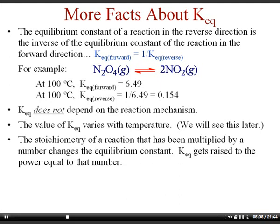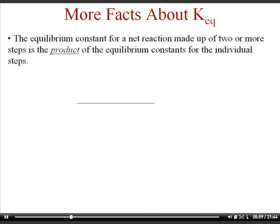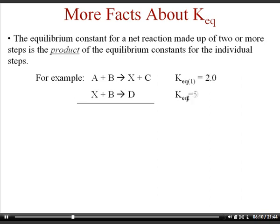The stoichiometry of a reaction that has been multiplied by a number changes the equilibrium constant. If you double the chemical equation from a 1-to-2 ratio to a 2-to-4 ratio, you get a new equilibrium constant by squaring your old equilibrium constant. Whatever you multiply a reaction by, the exponent on the K value is raised to that power. Also, the equilibrium constant for a net reaction made up of two or more steps is the product of the individual equilibrium constants — so when you add chemical reactions using Hess's law, you multiply the K values together.